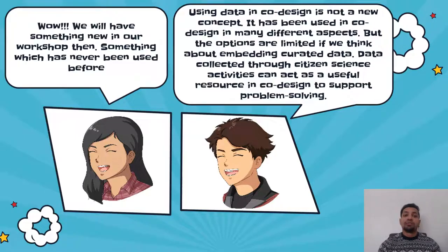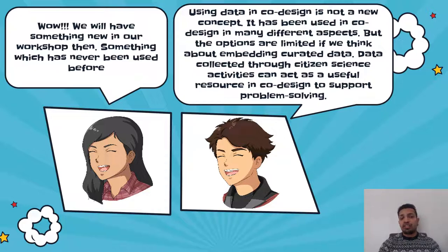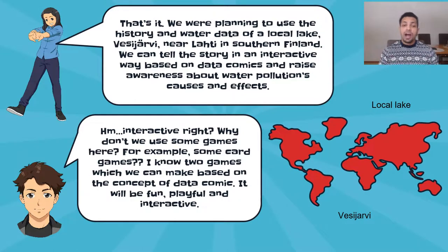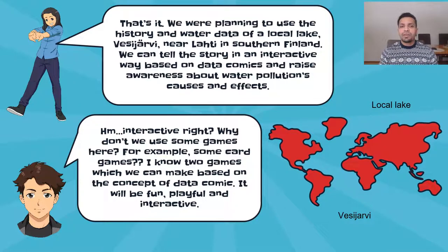Using data in co-design is not a new concept. It has been used in co-design in many different aspects, but the options are limited if we think about embedding curated data. Data collected through citizen science activities can act as a useful resource in co-design to support problem solving. Annika and Anne were planning to use the history and water data of the local lake called VCRB, so they can tell the story in an interactive way based on data comics and raise awareness about water pollution's causes and effects, which was the goal of their workshop.